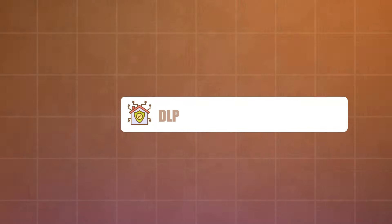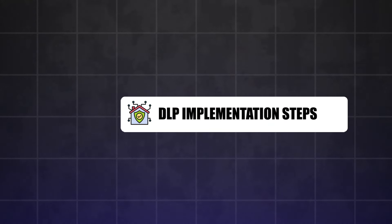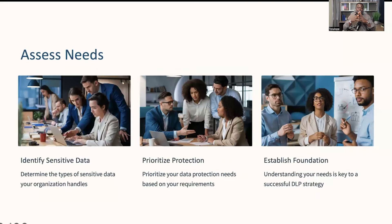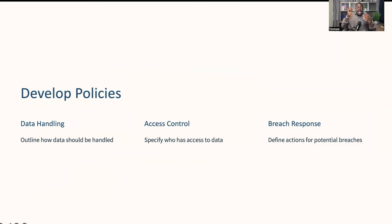Now let's talk about DLP implementation steps. Implementing DLP effectively requires a structured approach. First, you want to start by assessing your needs — identify the types of sensitive data your organization handles and prioritize your data protection requirements, because understanding what you need to protect and why is the foundation of a successful DLP strategy. After this, develop clear data protection policies and procedures. This should outline how data should be handled, who has access to it, and what actions to take in the event of a data breach. Policies provide a framework that guides employee behavior and ensures consistency in data handling practices.